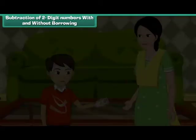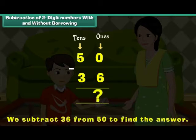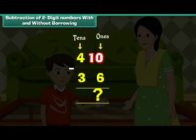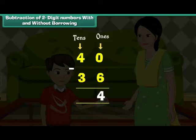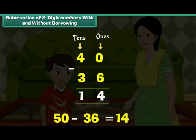Anuj's mother gave him 50 rupees. He spent 36 rupees at the Christmas carnival. How much is he left with? We subtract 36 from 50 to find the answer. 0 is less than 6, so it borrows 1 from 5 and becomes 10. 10 minus 6 is equal to 4. 5 has lent 1, so it becomes 4. 4 minus 3 is equal to 1. Therefore, 50 minus 36 is equal to 14. Anuj has 14 rupees left.